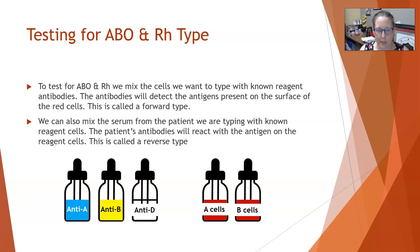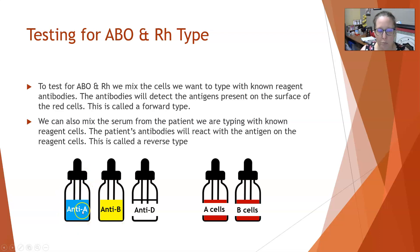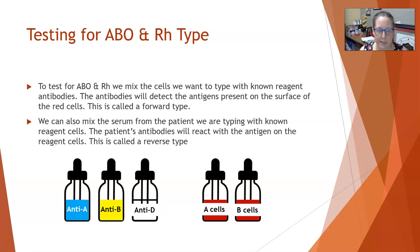To test for ABO and Rh, we mix the cells we want to type — the unknown — with known reagent antibodies. We have a vial of anti-A (always colored blue), a vial of anti-B, and a vial of anti-D antibodies. We mix a little bit of the patient's blood with a few drops of antiserum from each vial in separate little wells and see what reactions we get, knowing that anti-A will clump with A, anti-B will clump with B, and anti-D will clump with big D. This is called a forward type, and it's the most common method — the card type you may have done in an anatomy lab is essentially this.